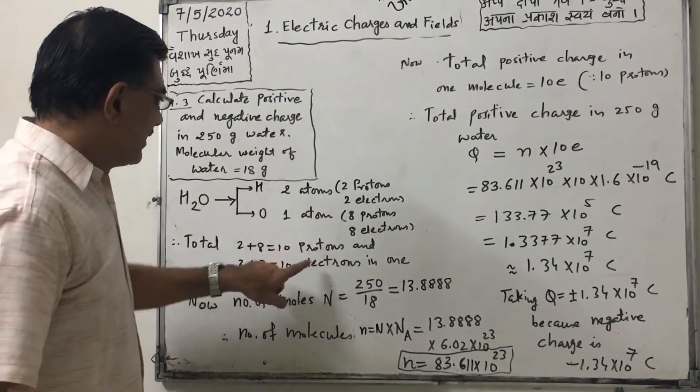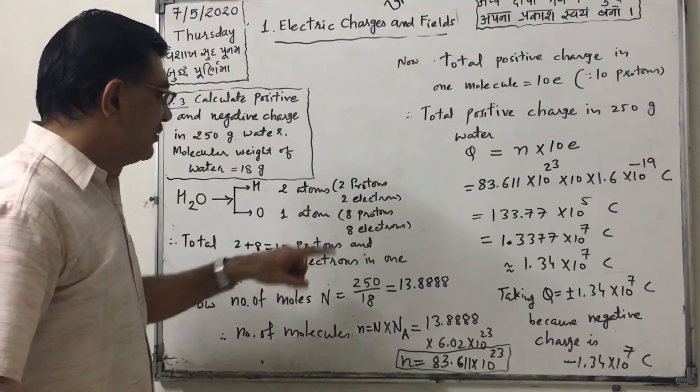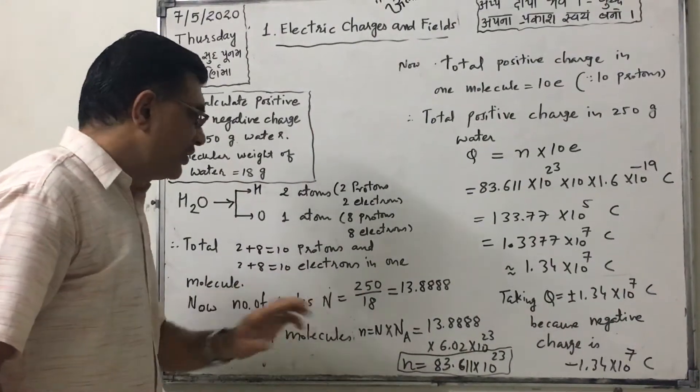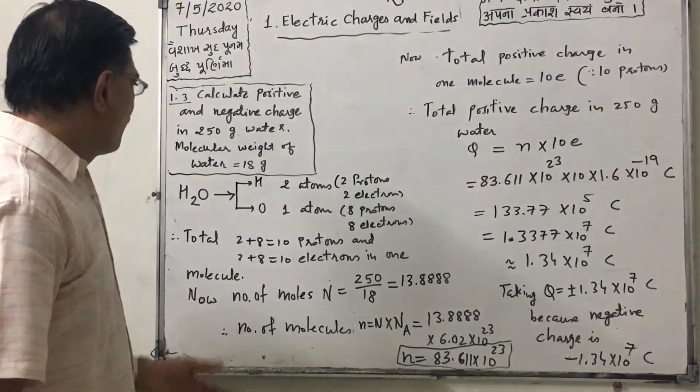So total 2 plus 8, that is 10 protons in 1 molecule and 2 plus 8, 10 electrons in 1 molecule of water.